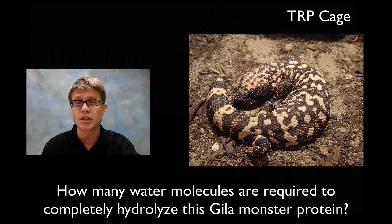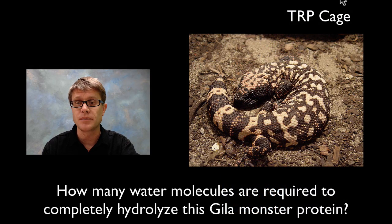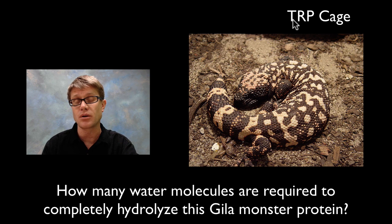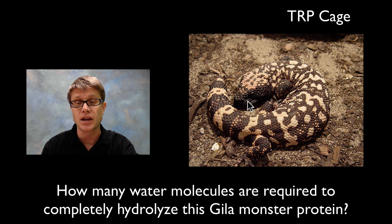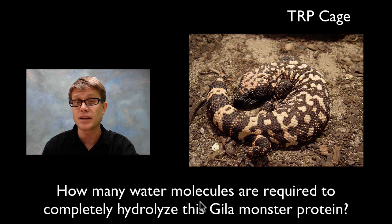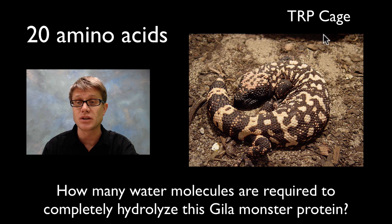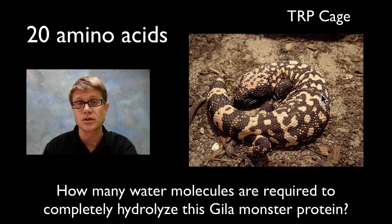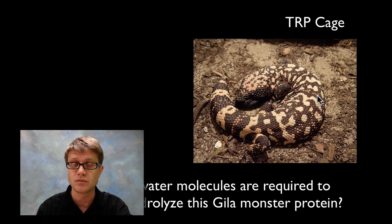Let me give you a quick question to wrap your head around. The TRP cage is one of the smallest proteins found in nature, found in the saliva of a Gila monster. How many molecules of water would be required to completely hydrolyze this Gila monster protein? You need to know that there are 20 amino acids in this very small protein. How much water do we require to break that up? Put your answers down below.